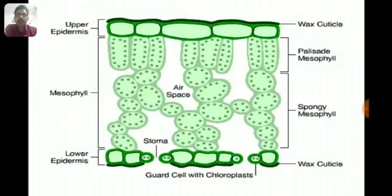On your screen you can see a cross-section of a leaf. This cross-section shows the upper epidermis and lower epidermis. The upper epidermis is covered by a waxy cuticle. The lower epidermis is also covered by a waxy cuticle, but it is discontinuous due to the presence of stomata. The tissue present in the leaf is called mesophyll tissue.